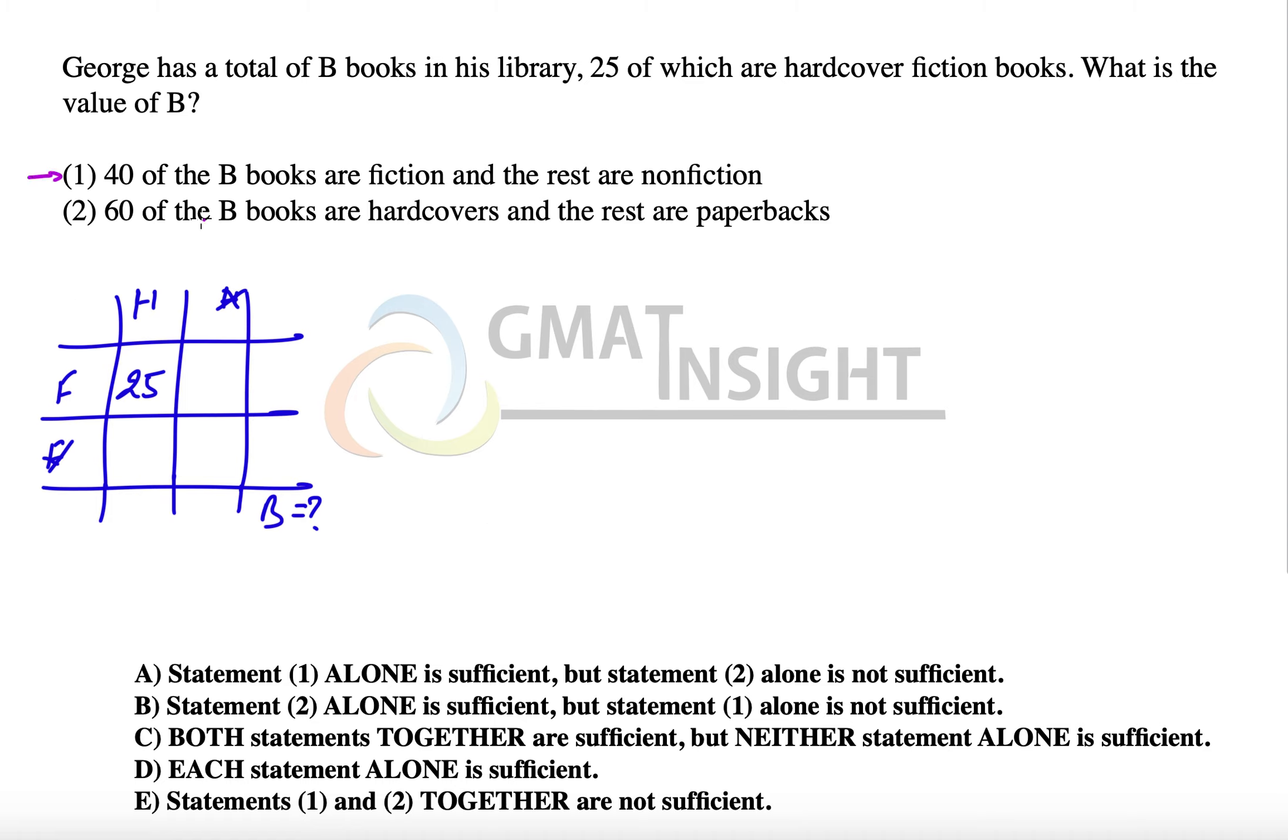So 40 are fiction and the rest will be B minus 40 which are nonfiction. That doesn't give us any information about the value of B. Therefore, the first statement alone is not sufficient to answer the question.